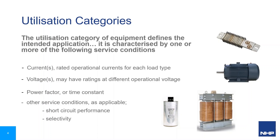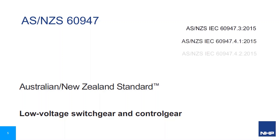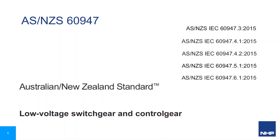Once we understand the utilisation, selection of a device can then proceed based on rated operational voltage, rated current or power of the load, and control functionality required. Utilisation categories are defined for specific equipment types, being disconnectors and load switches, motor starters, control circuit devices, and transfer switches.